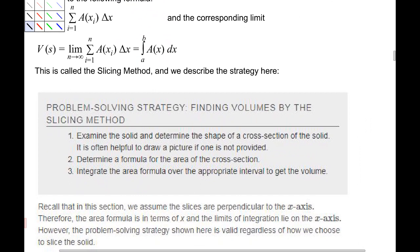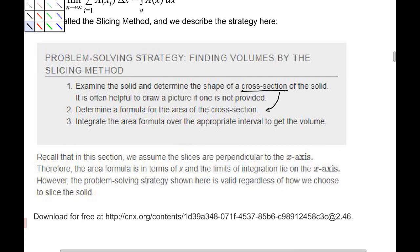Here is the method we are going to follow — finding volumes with the slicing, or disk method as it will eventually be called. First, examine the solid and determine the shape of the cross-section. Then determine the area of the cross-section — drawing a picture helps. Determine the formula for that area, then integrate that area formula over the interval to get the volume. In this section we assume slices are perpendicular to the x-axis, so the area is in terms of x and the limits of integration are on the x-axis. This holds similarly if we integrate in terms of y.